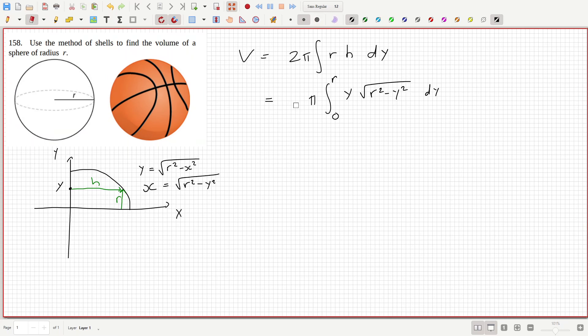And what I'll do is put a minus here and a minus here, so that would be minus pi, I integrate minus two y, r squared minus y squared power a half d y.